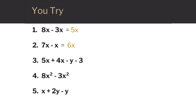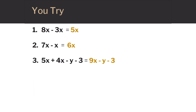Now you try these — the answers are on the next slide. In the third problem, the 5x and 4x are like terms: 5 plus 4 is 9, so we have 9x minus y minus 3.